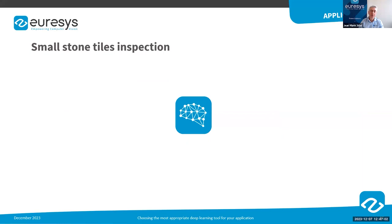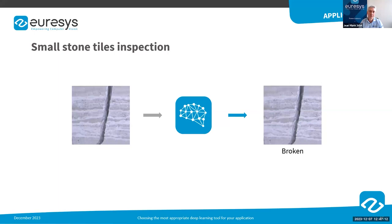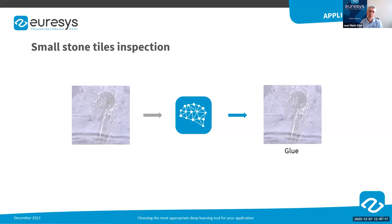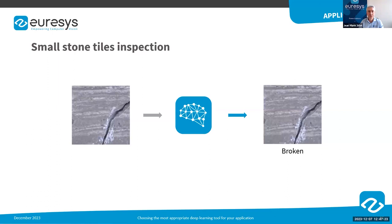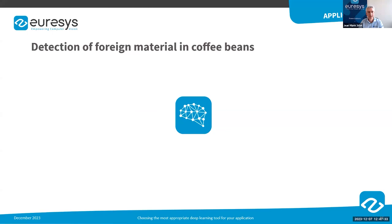Let's consider several types of applications and determine the most appropriate deep learning tool for each. Suppose we need to inspect small stone tiles — the application must separate good samples from bad ones. The position and number of defects on the tile does not really matter, but it is mandatory to identify the type of defect. To summarize: we need to detect defective products and identify the type of defect, but location does not matter. EasyClassify is clearly the perfect tool for this.